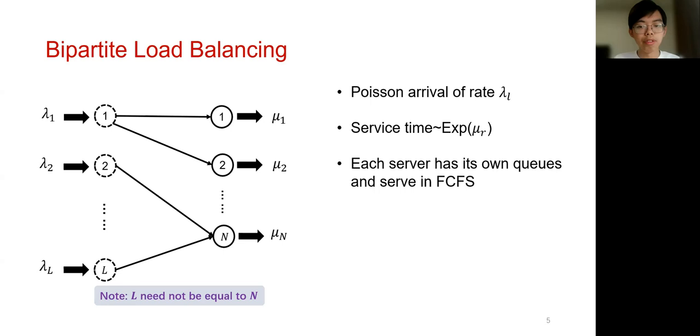Then to model the locality constraints, we make use of edges in the bipartite graph. A job of type L can be served by a server R if and only if there is an edge connecting the two nodes. And when a job arrives, the dispatcher can only route the job to a connected server in the bipartite graph. The goal is to design algorithms to dispatch incoming jobs to feasible servers so that the mean response time is minimized.